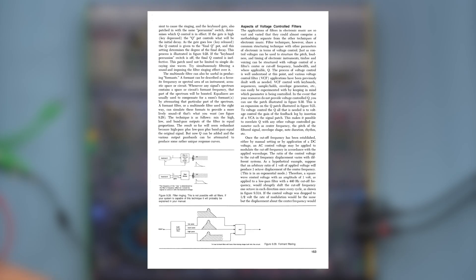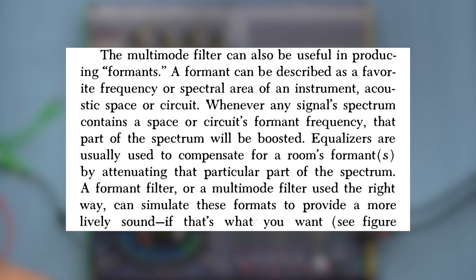If we take the chapter on multimode filters in Alan Strange's Electronic Music, we can read something very interesting. He says that the multimode filter can also be useful in producing formants. A formant can be described as a favorite frequency or spectral area of an instrument, acoustic space or circuit. Whenever any signal's spectrum contains a space or circuit's formant frequency, that part of the spectrum will be boosted. Equalizers are usually used to compensate for a room's formant by attenuating that particular part of the spectrum.